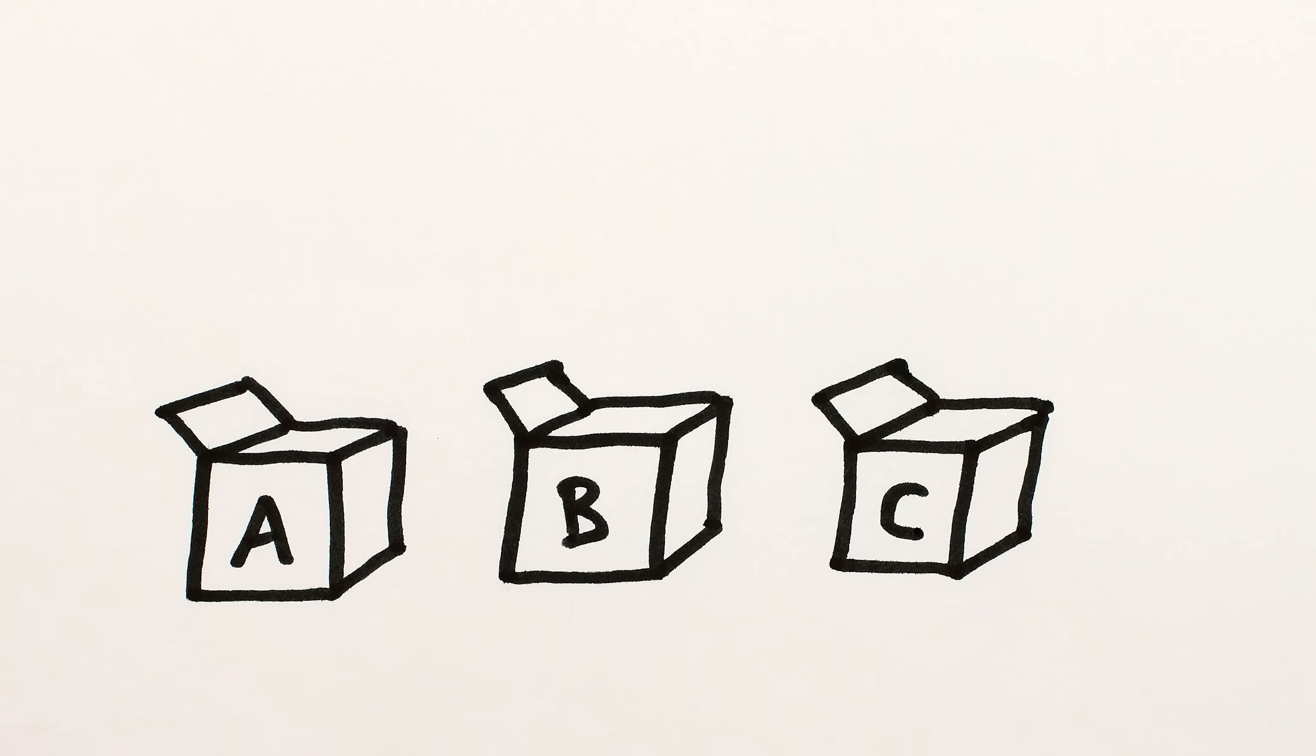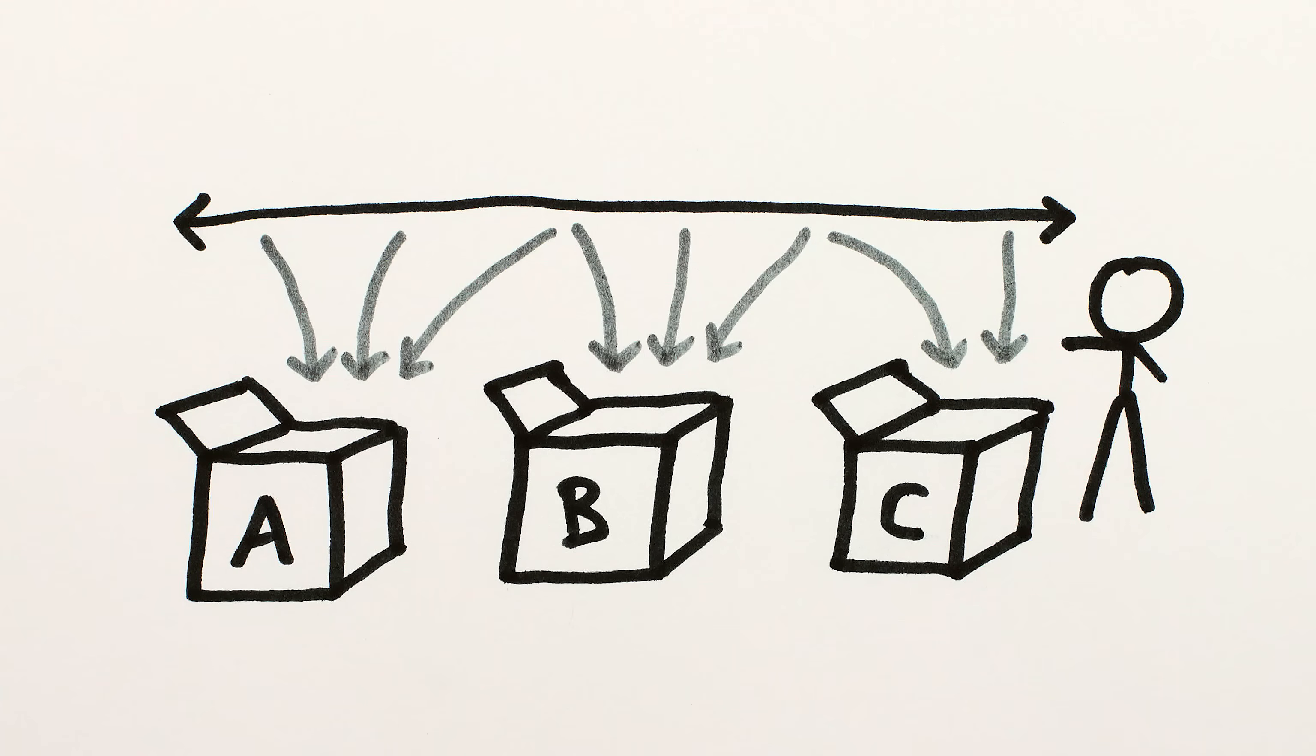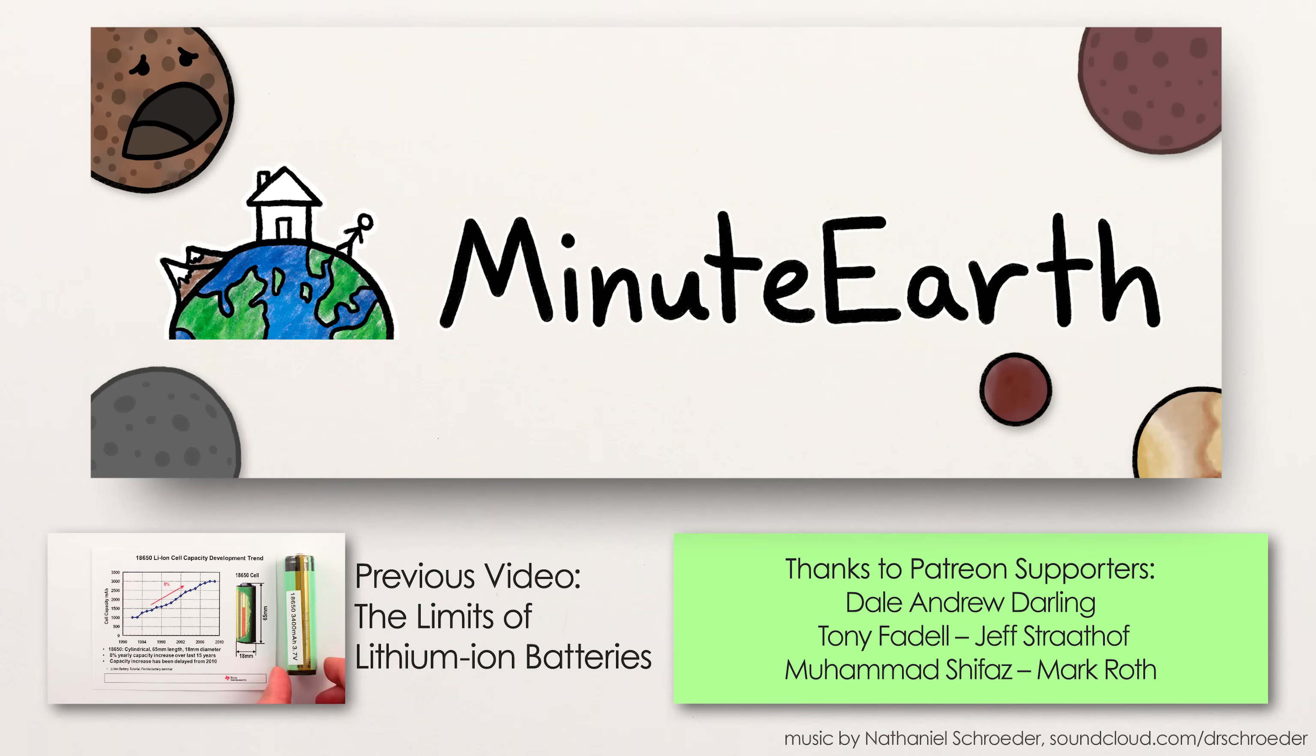But enough about space objects that have nice, clean, easy definitions. There's also a lot of stuff out there that doesn't fit nicely into boxes, like moons. We supposedly have a good definition for what a moon is, but our solar system is full of objects that fall into a weird gray area between moon and not moon. Come on over to MinuteEarth to find out why our definition of moon might be broken. We'll see you next time.